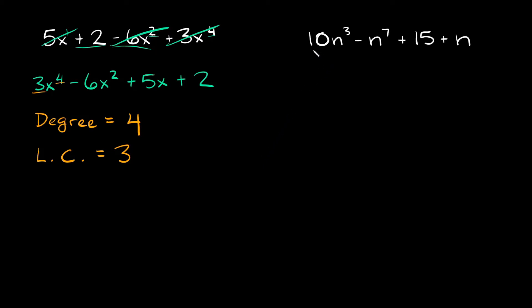Let's try one more. So up here we have 10n to the third power minus n to the seventh power plus 15 plus n. Okay, so again the way you write these in standard form is just order the exponents from biggest to smallest. So the biggest one is the 7. So that means I'm gonna write this negative n to the seventh. Always remember to attach the sign with your term right here. So this is gonna be negative n to the seventh.